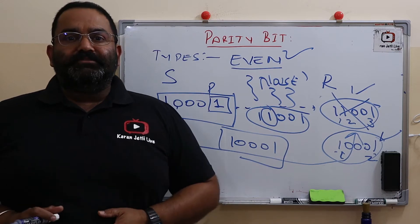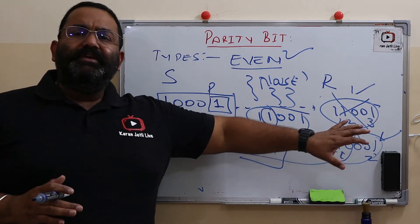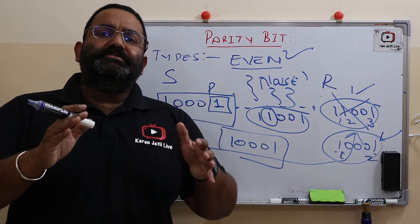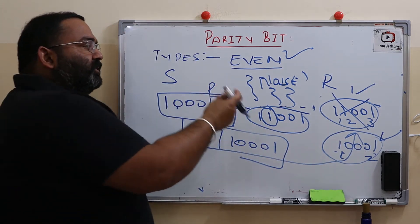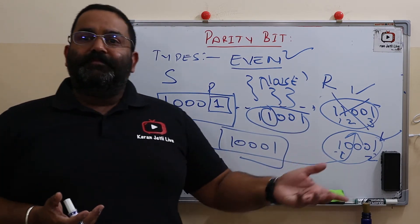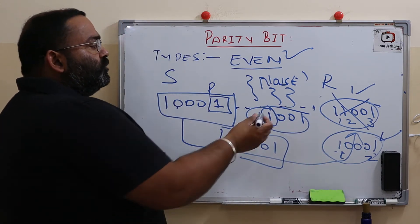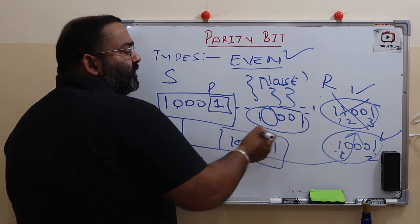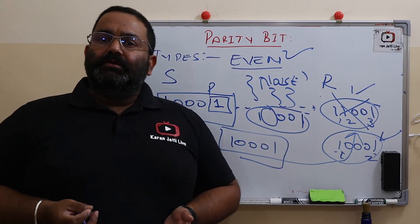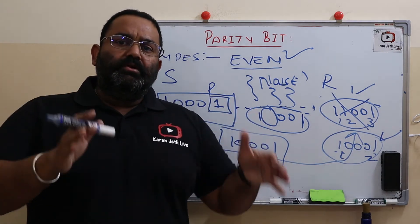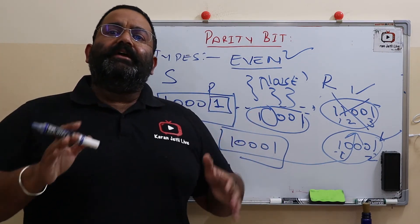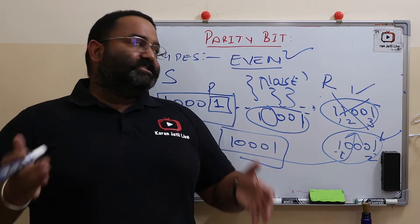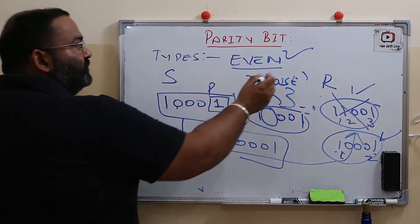The parity bit is not one hundred percent foolproof. Sometimes noise can change two bits simultaneously, making the count appear even again even though the data is wrong. So parity cannot detect all errors, but it can still reduce the number of errors to quite some extent.